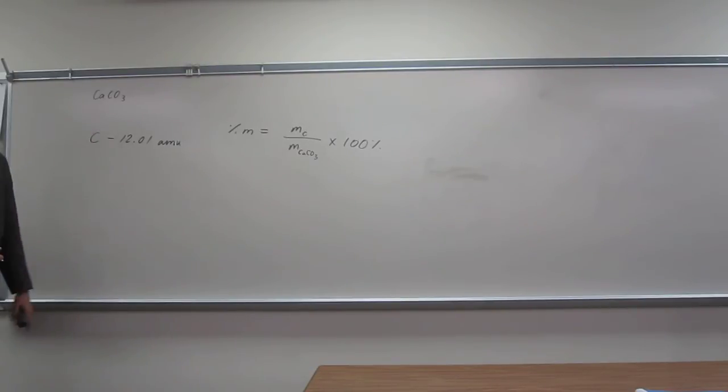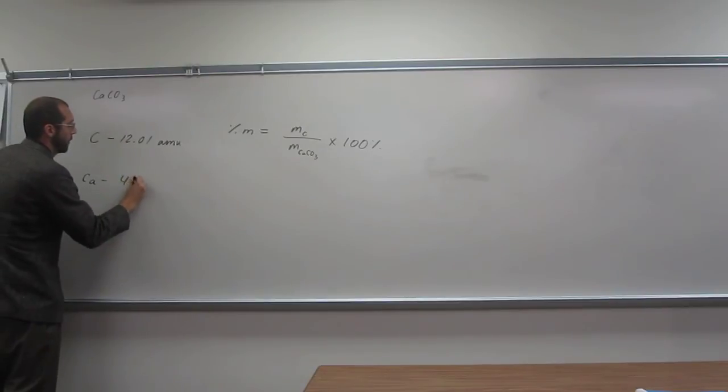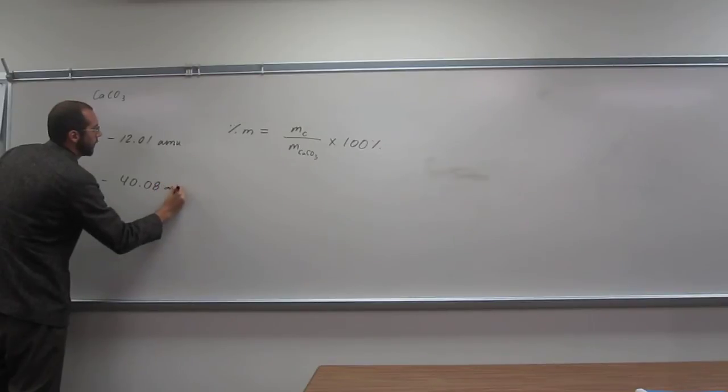And how will we figure out calcium carbonate? Look at the periodic table and add all the stuff together. So, calcium carbonate is going to be, calcium is what? 40.01, right? Or 40.08, sorry. Amu.